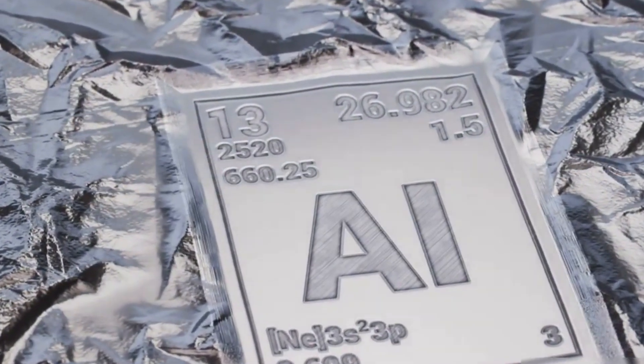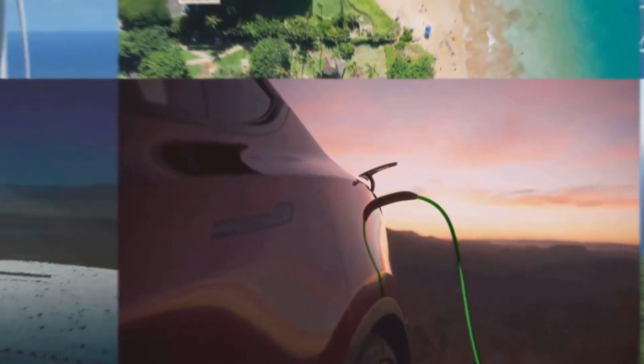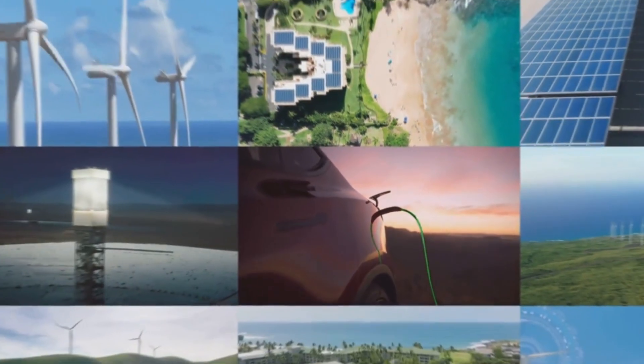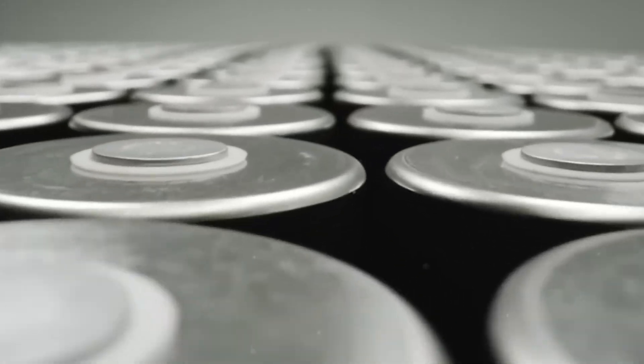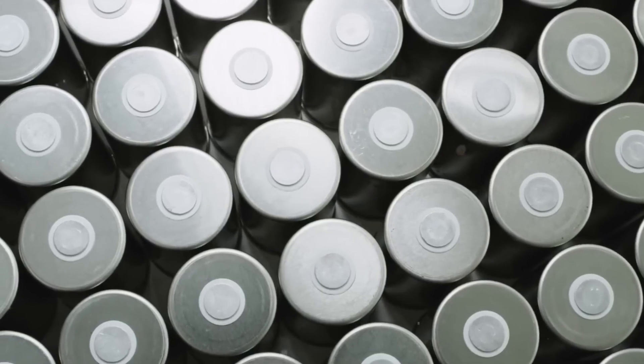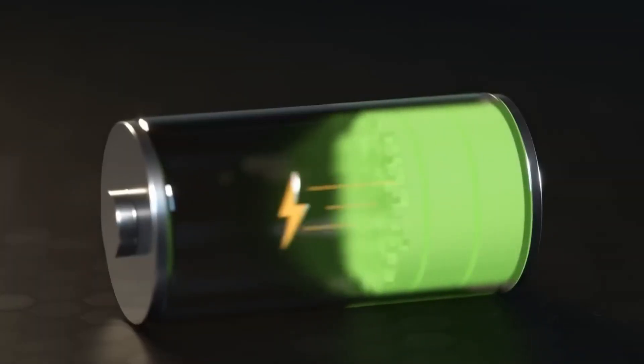Aluminum-ion erases all of that. It arrives just when the world needs it most. If Tesla unveils a fully deployable aluminum-ion battery this September, 2026 will be the first year electric vehicles truly go mainstream, not because of subsidies or hype, but because they finally make sense.